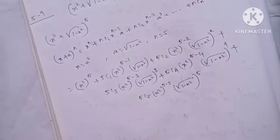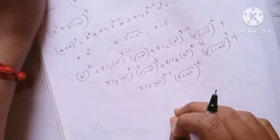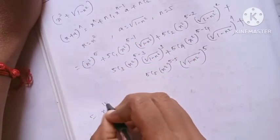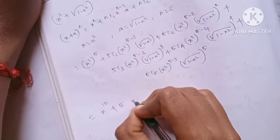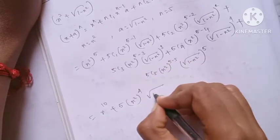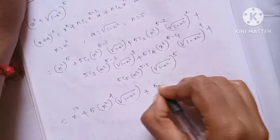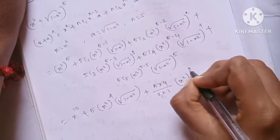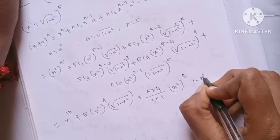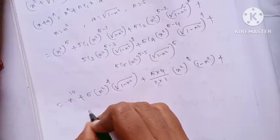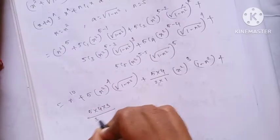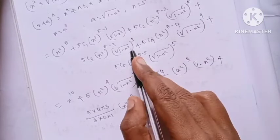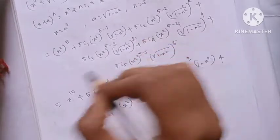So how do we simplify this? Let's simplify. 5C1 is 5, so we get 5 times (x squared) power 4 times root(1 minus x squared). 5C2 is 5 into 4 divided by 2 into 1, which is 10, giving 10 times (x squared) power 3 times (1 minus x squared). Cancel the square.